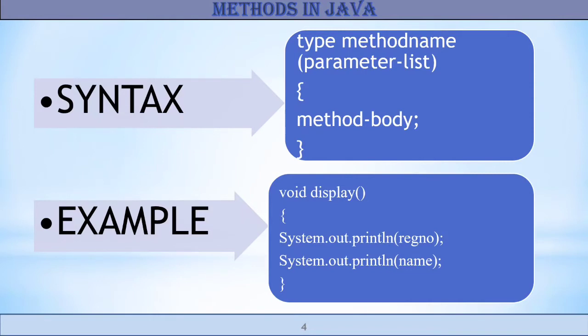The parameter list contains variable names and types of all the values. The variables are separated by commas. When there's no input data, we can use empty parenthesis. Let us see one example: void display within which we are going to print two variables, register number and name. So this method helps to print register number and name.